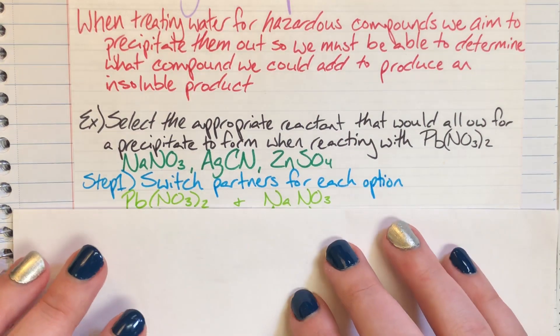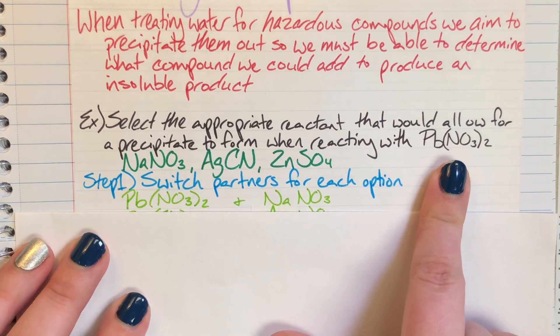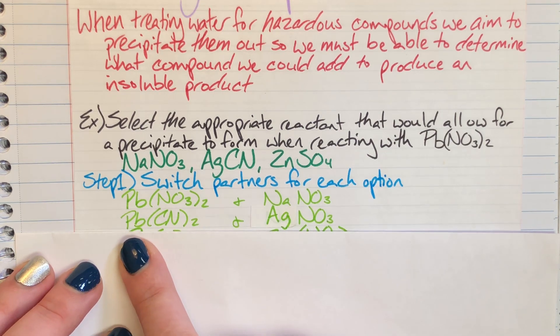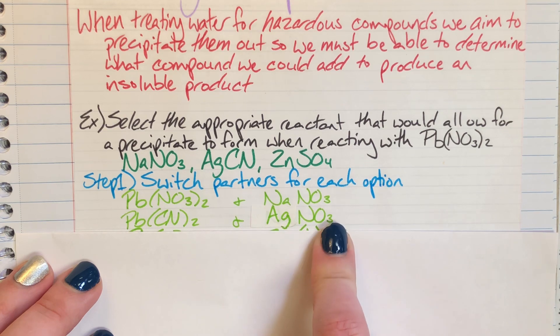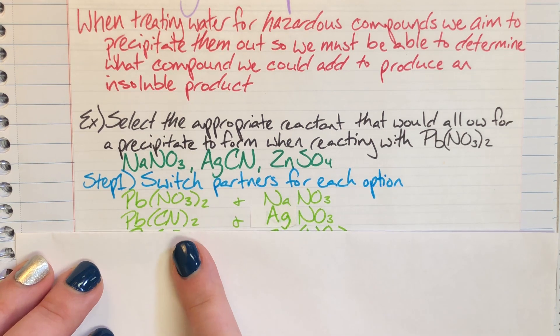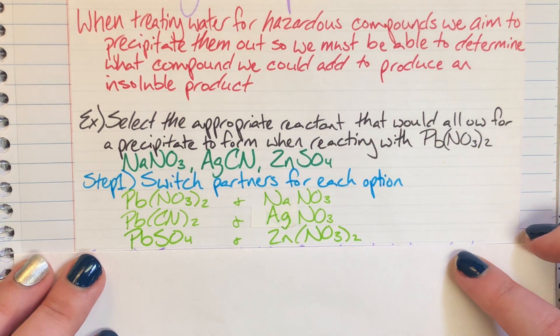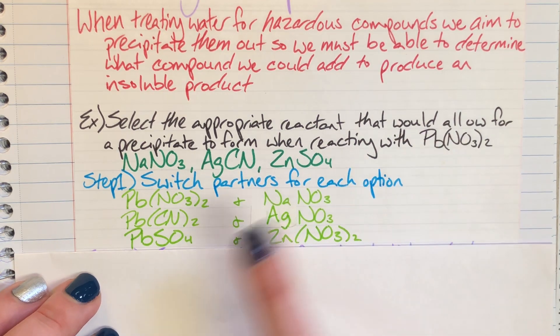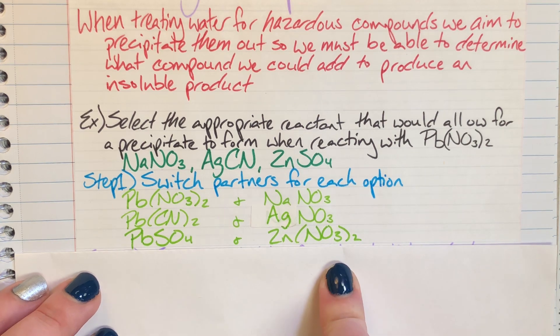Next I had silver cyanide and lead(II) nitrate, so I will switch those partners. Lead(II) nitrate will form lead(II) cyanide and then silver will form silver nitrate. At least here I've switched my anions and I have a chance at getting something useful. The last one is between zinc sulfate and lead(II) nitrate, so I will produce lead(II) sulfate and zinc nitrate.